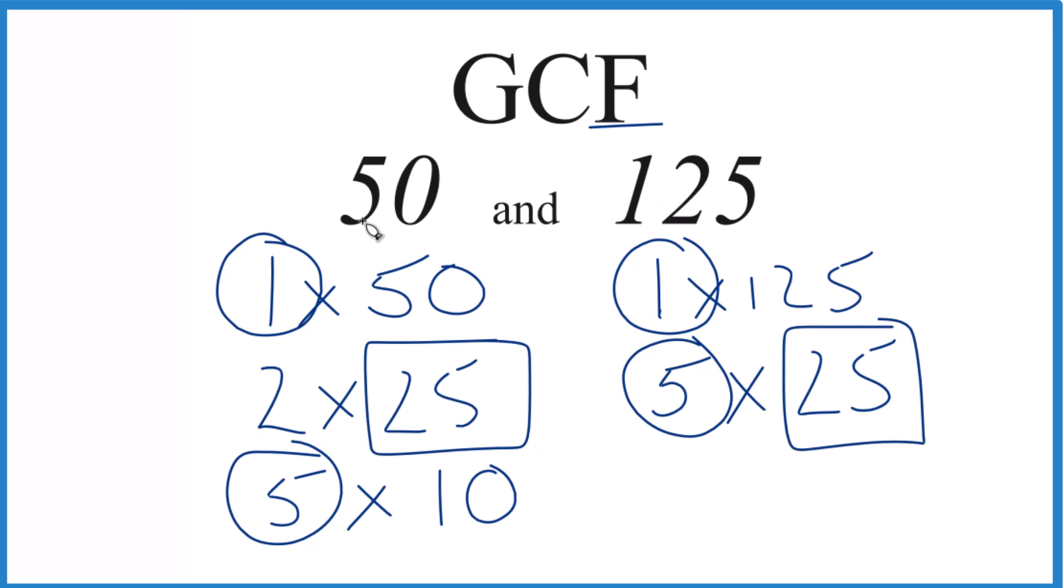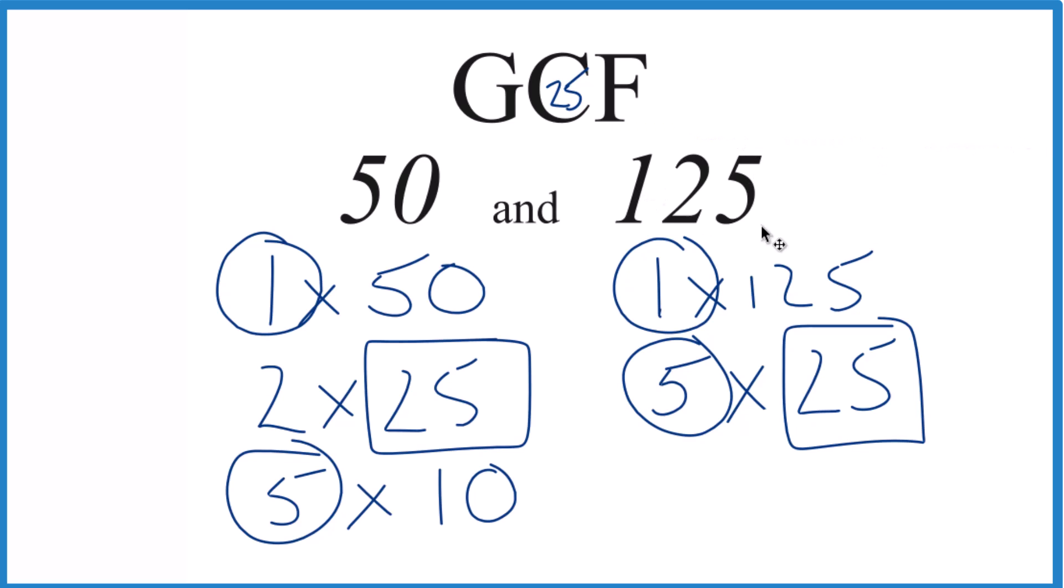So the greatest common factor between 50 and 125 is 25. That's how you find the GCF for 50 and 125.